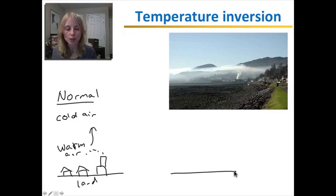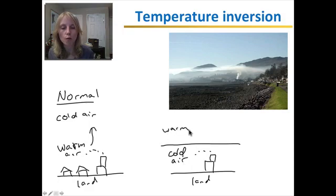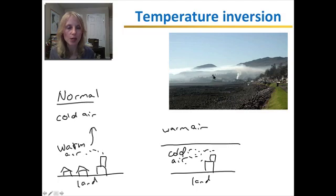In temperature inversion, a layer of cold air gets trapped beneath a layer of warm air. Cold air does not rise, so all of the pollution just stays in the town. You can see that happening here in this picture as the smoke is rising and then it gets blocked. It cannot rise any further.